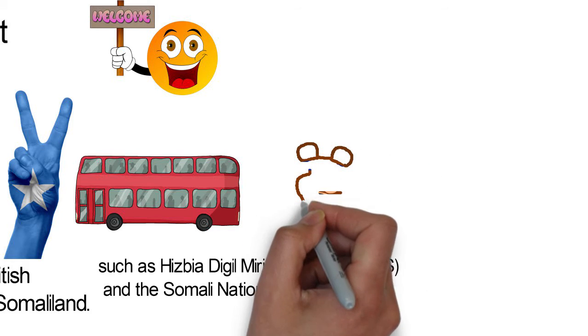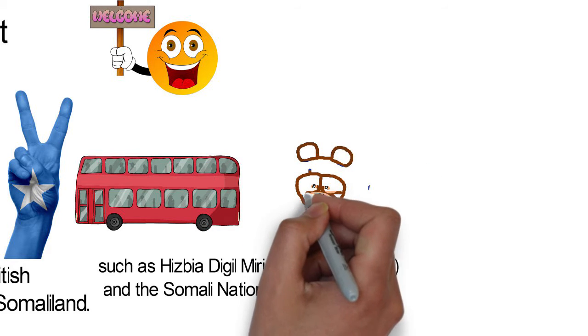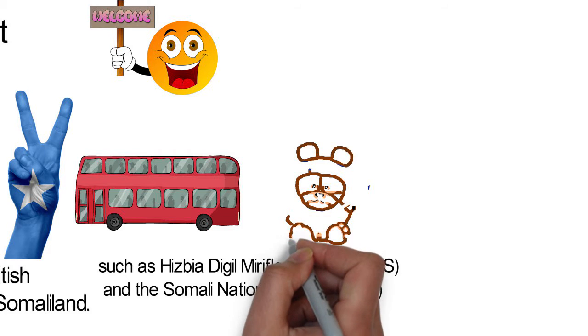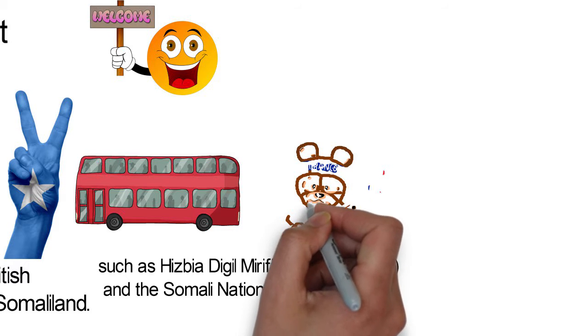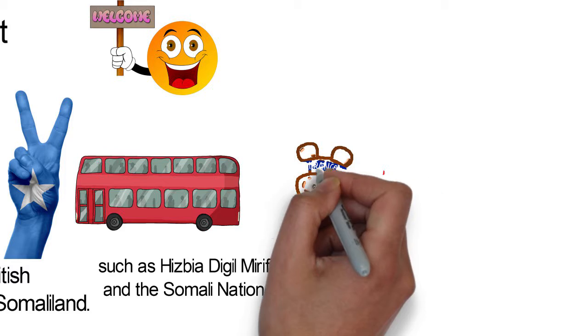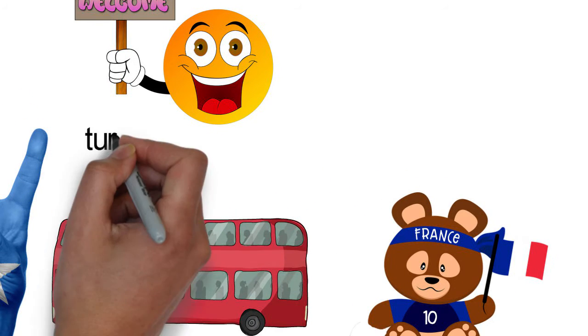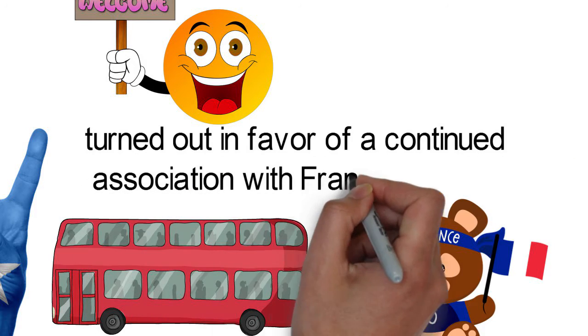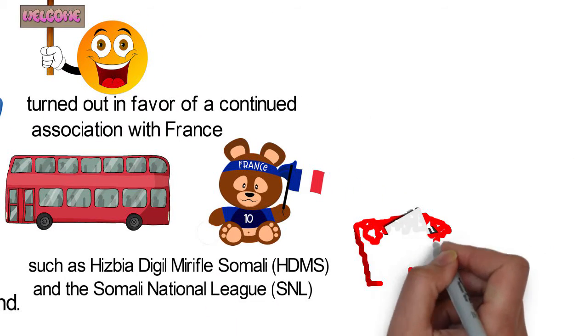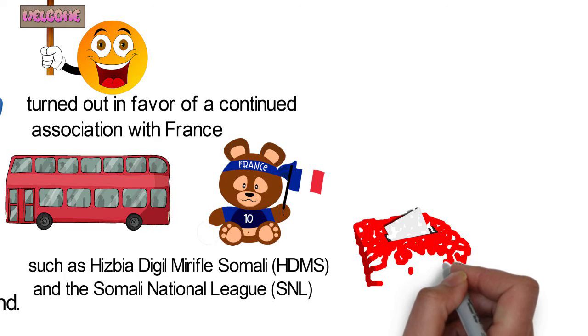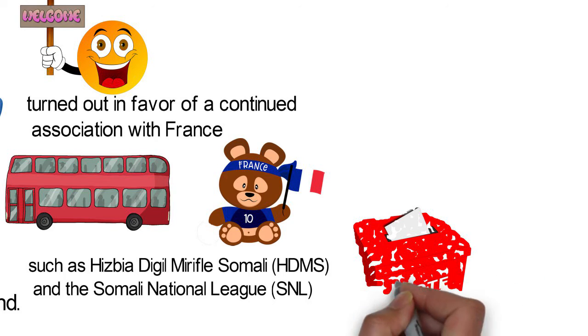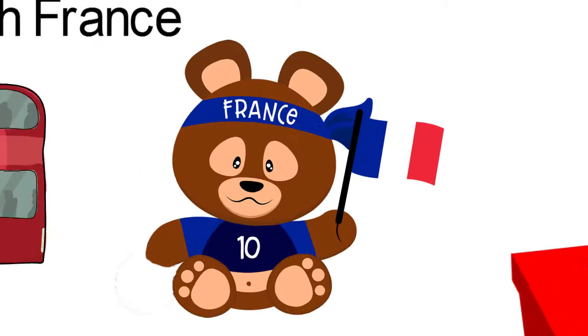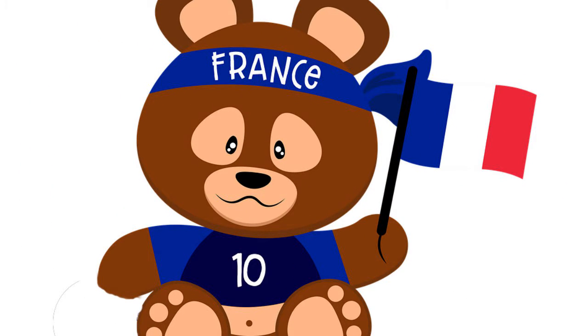In 1958, there was a referendum in Djibouti, which was known as French Somaliland, to decide whether or not to join the Somali Republic or to remain with France. The referendum turned out in favor of a continued association with France, mainly as a result of the combined votes of the Afro-ethnic group and the resident Europeans. However, there were allegations of widespread election rigging, with the French expelling thousands of Somalis before the referendum.